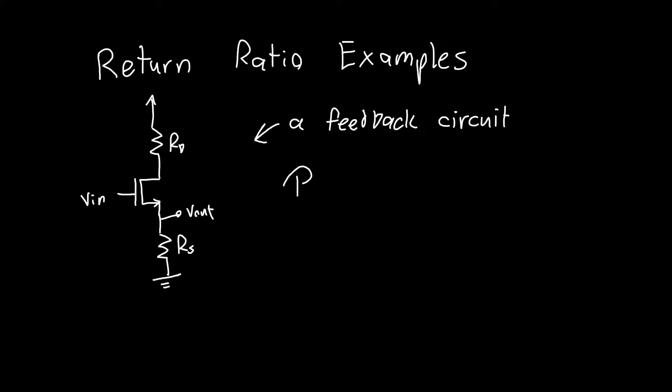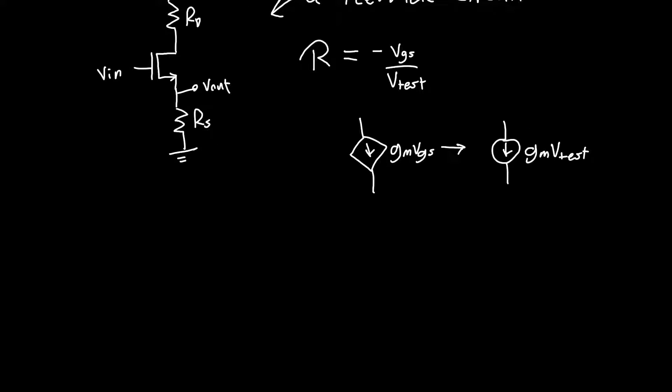What is its return ratio? For transistors, it's easiest to think of in terms of the negative of VGS in response to some test voltage. When we apply, we change this GM VGS source inside the transistor to an independent source of value GM V test.